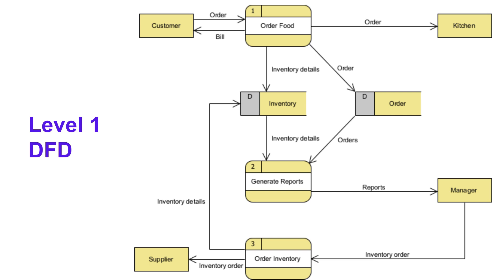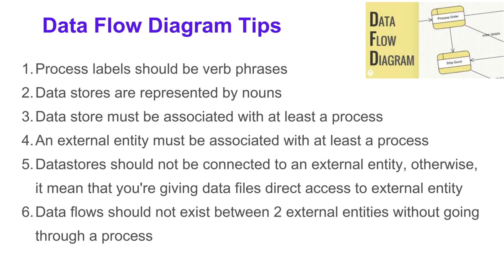The Order Food process also delivers a bill to the customer. The manager can receive reports through the Generate Report process, which takes inventory details and orders as input from the inventory and order data stores respectively. The manager can also initiate the Order Inventory process, which forwards inventory orders to the supplier and stores updated inventory details in the inventory data store. This gives a better understanding of the processors, data stores, and entities involved.